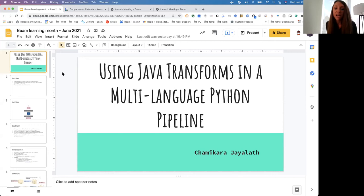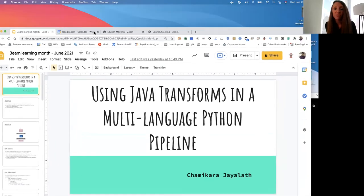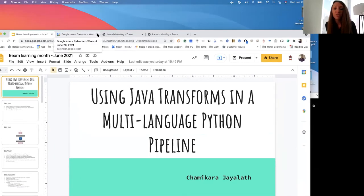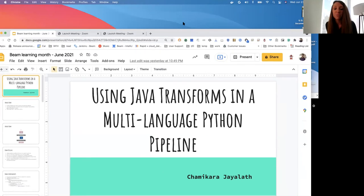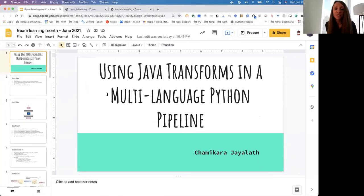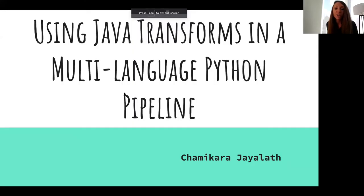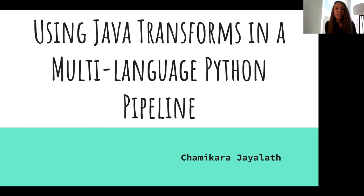We encourage you to interact with Cham as well as each other in the chat. During Q&A you will be able to ask your questions by raising your hand using the raise-hand feature and we will let you ask your question by coming off mute. Otherwise you can ask questions in the chat and we will read those out loud at the end of the talk. You can learn more about Apache Beam by joining our Slack channel and visiting the website — both links will be placed in the chat. It is my pleasure to introduce Chamakara, a software engineer at Google.